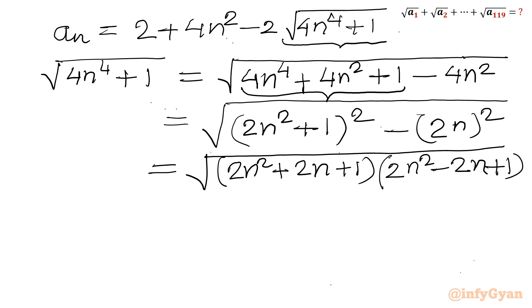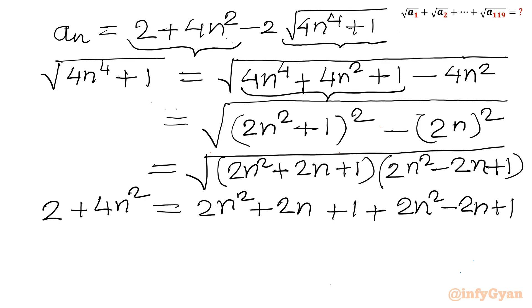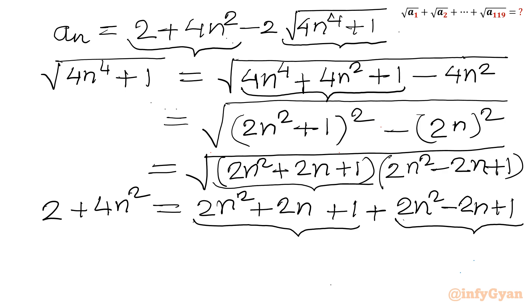Now for the term 2 + 4n², I will split 4n² as 2n² + 2n² and split 2 as 1 + 1, then add and subtract 2n. This gives (2n² + 2n + 1) + (2n² − 2n + 1), which matches exactly the same two brackets from the factored form.